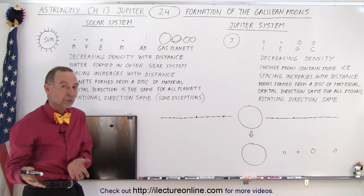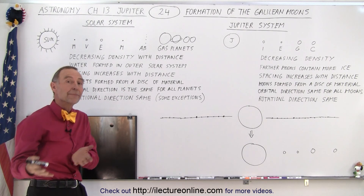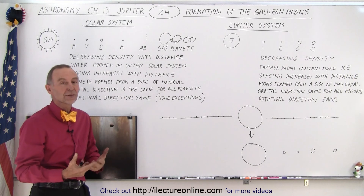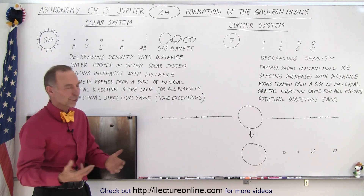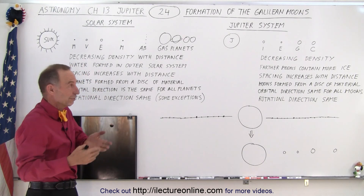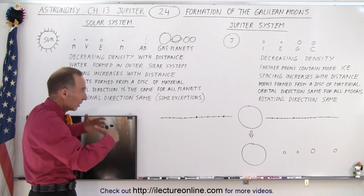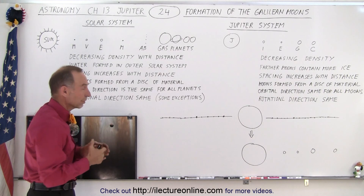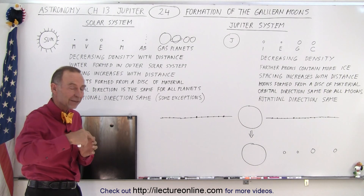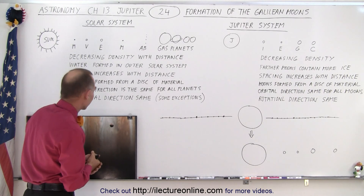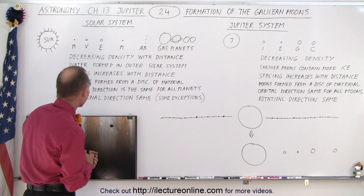Much of that water came back to the Earth in the form of comets, so therefore the Earth now has oceans. We presume that Mars, Venus, and Mercury also at some point had a lot more water from impact, but of course that water has escaped primarily.